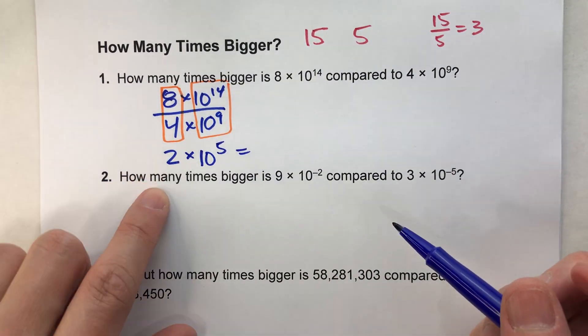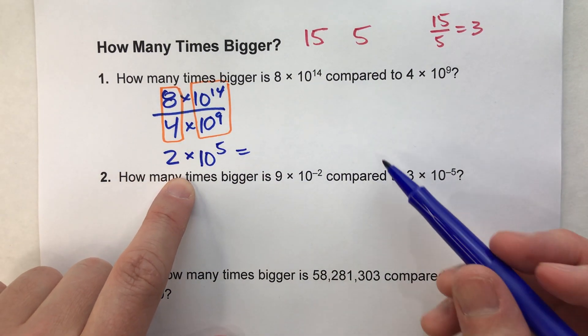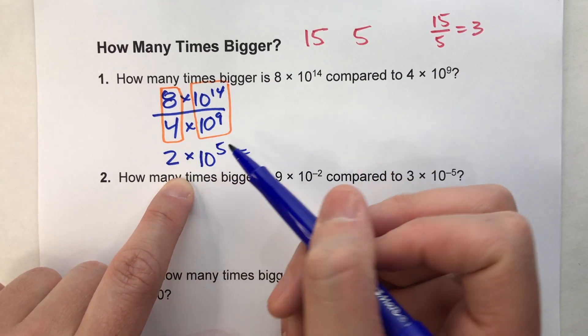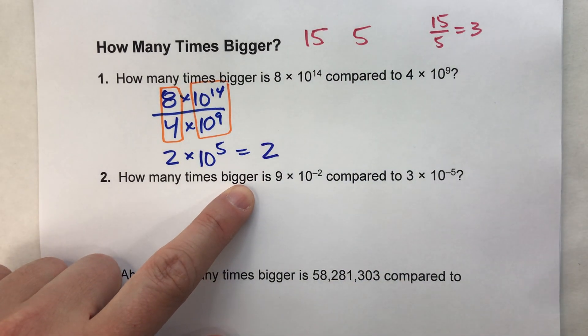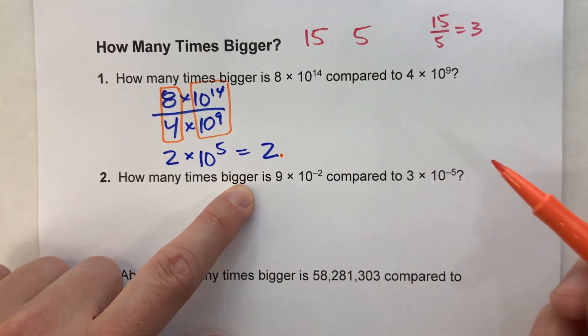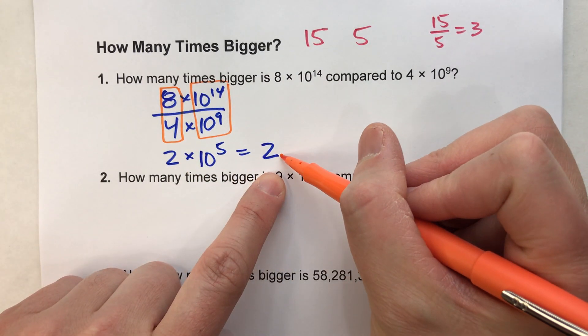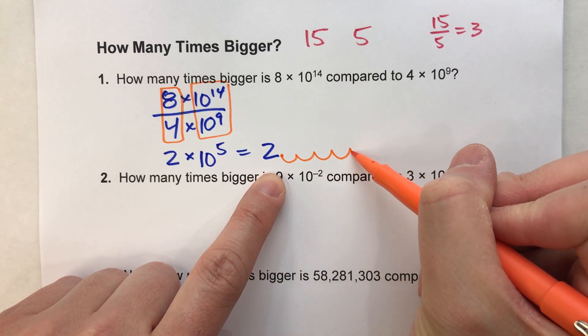So this is really 2 times 10 to the 5th power, which if you know how to multiply by 10s, it simply means move that decimal point over 5 places to the right. So if we start with 2.0, move it over 1, 2, 3, 4, 5 places over.